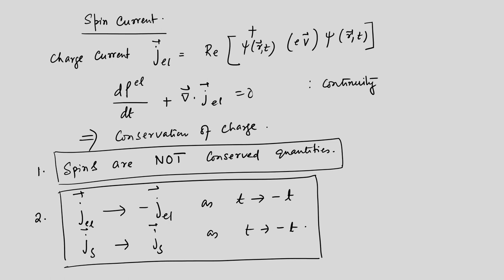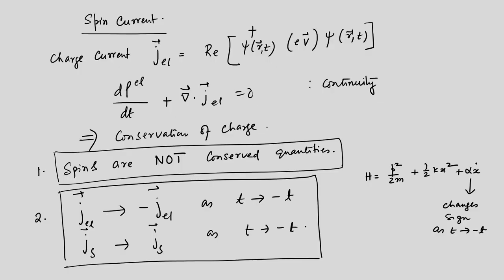To understand simply how a time-reversal-invariance-breaking term gives rise to dissipation, consider the Hamiltonian for a harmonic oscillator: p²/2m + ½kx². This has time reversal invariance — none of these terms change sign as t → −t. However, a dissipative term like α·ẋ does change sign as t → −t. That tells you that a term which changes sign under time reversal is dissipative. That is why the charge current is dissipative (odd under time reversal), whereas the spin current is non-dissipative because it maintains time reversal invariance.